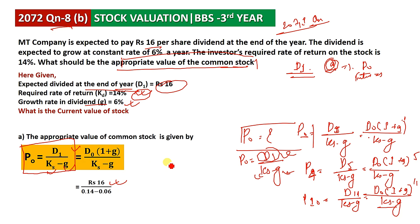Since 'end of year will be given' indicates future tense, we use D1. Ks is 14% and the growth rate g is 6%. Using P0 equals D1 by Ks minus g, the answer is 200 rupees.